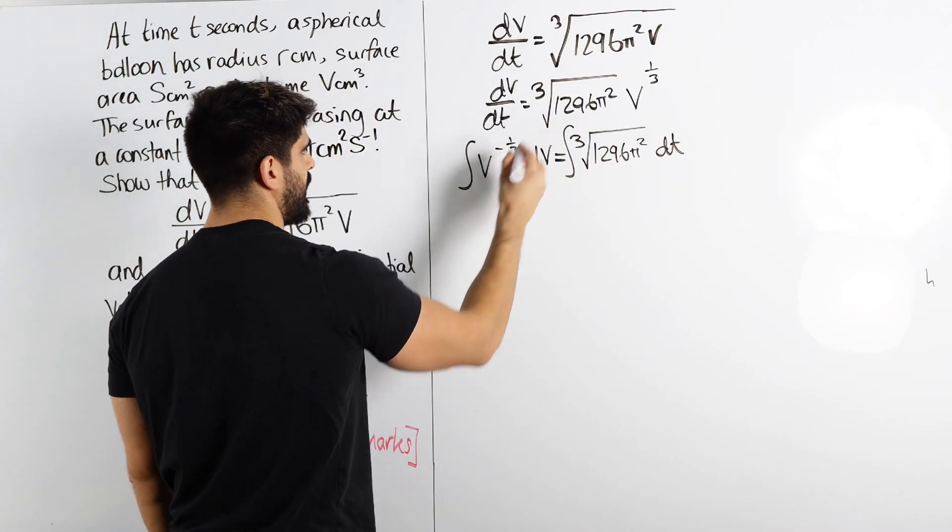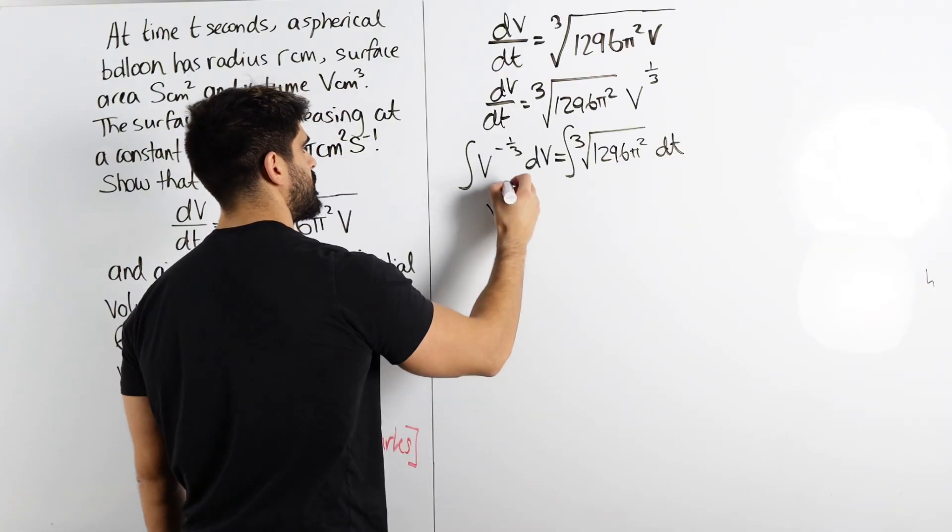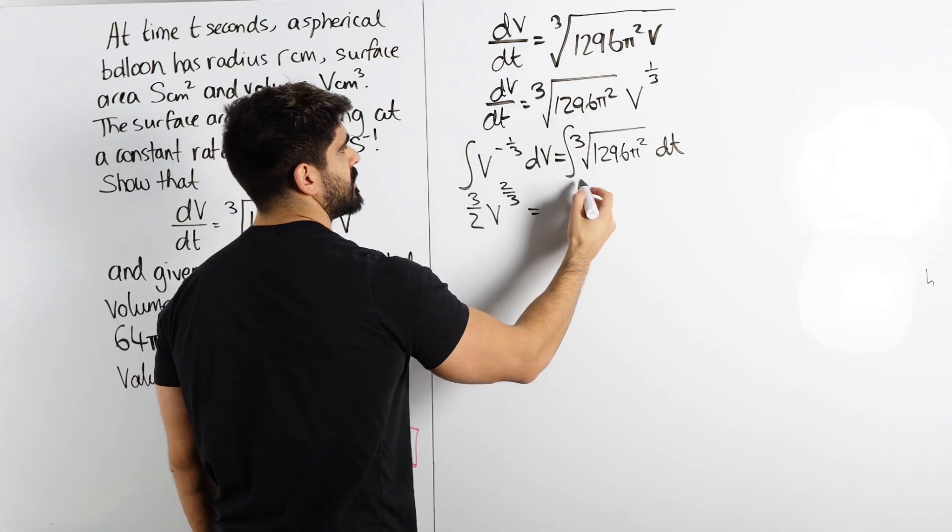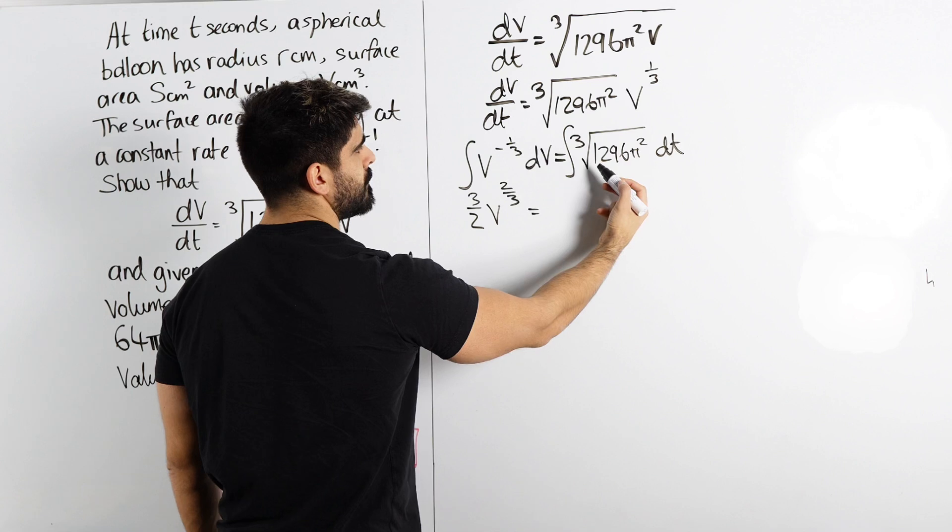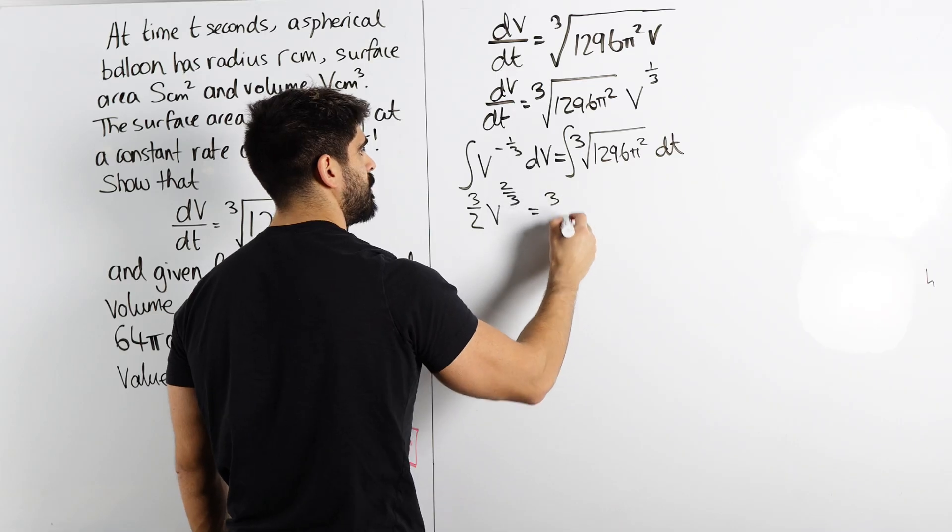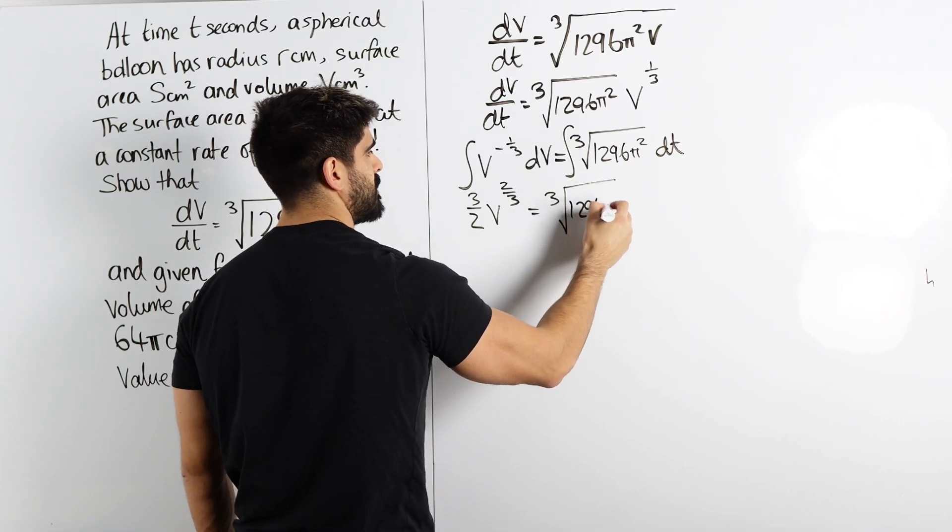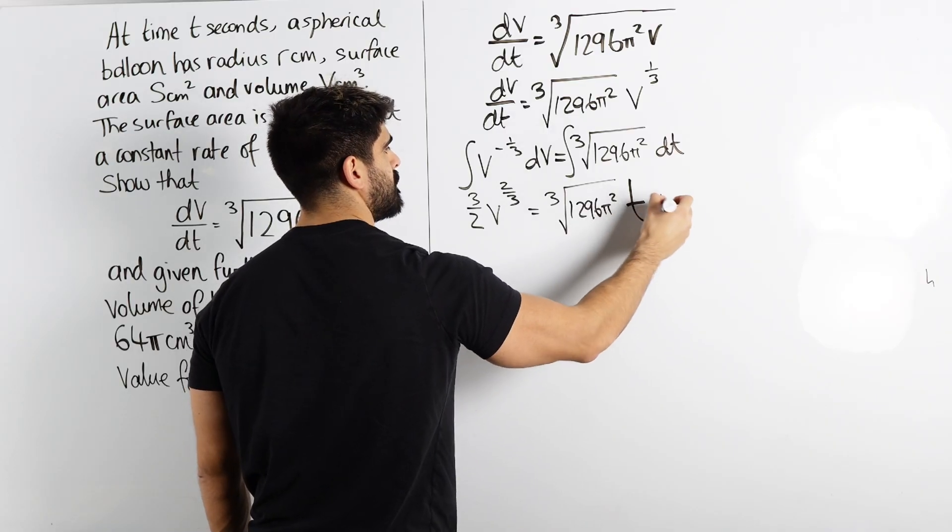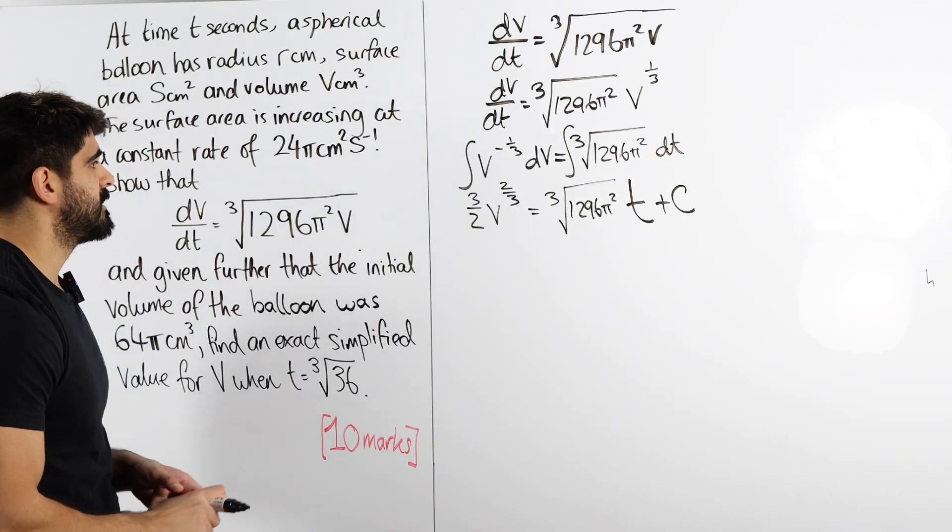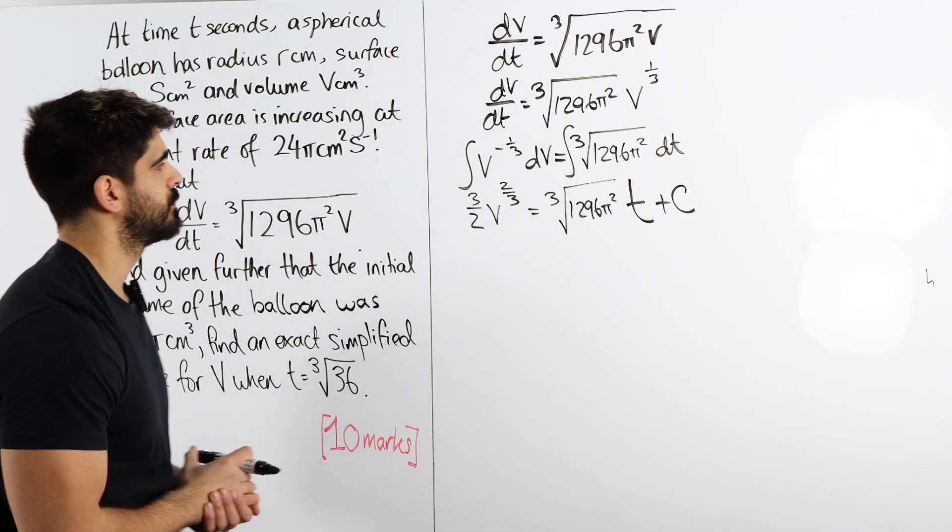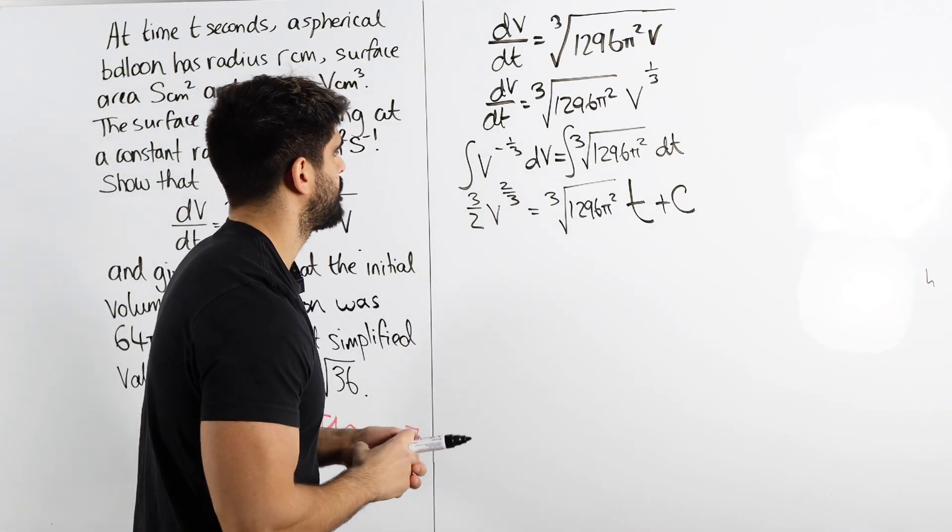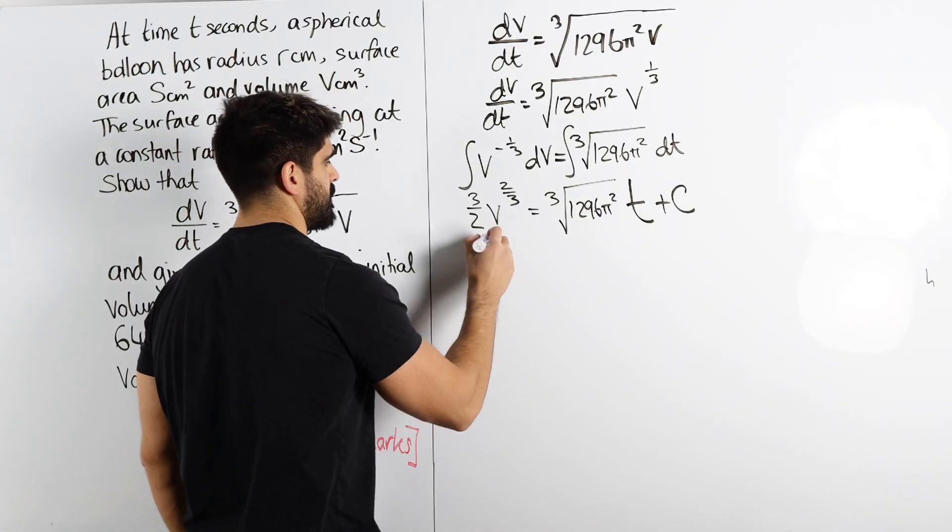Integrate both sides. Add 1 to the power would be 2 thirds, divide by that, 3 over 2 is the integral of this. So now, this is just a number. Imagine you're integrating 2, you'd write 2t. So you're going to get this t, the cube root of 1296π squared t plus c. Now, what do they want? They want the value of v when t is whatever. So maybe we can, I don't want to really do power through over two of both sides just yet, but I'm going to times through by 2 thirds. So let's get rid of this fraction.